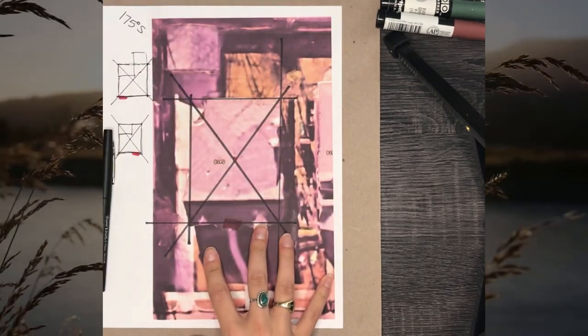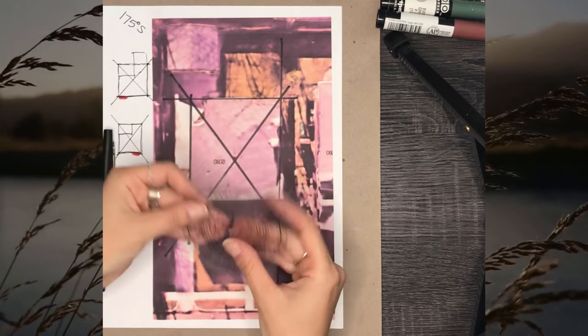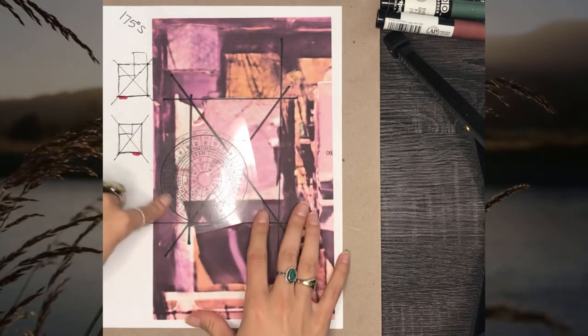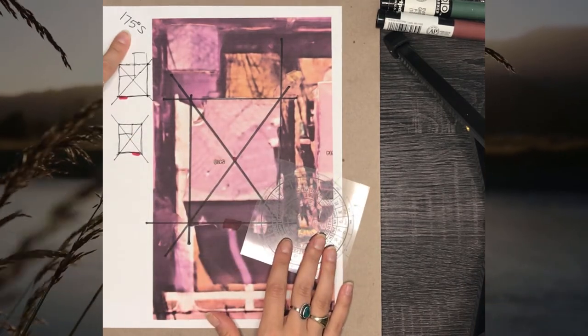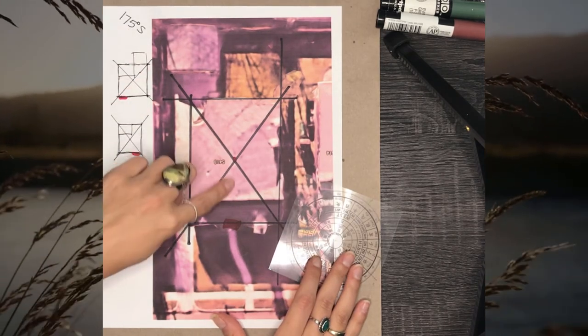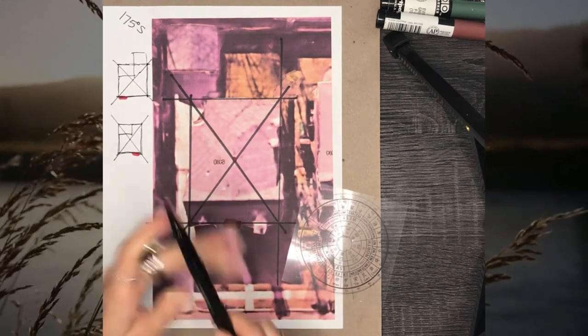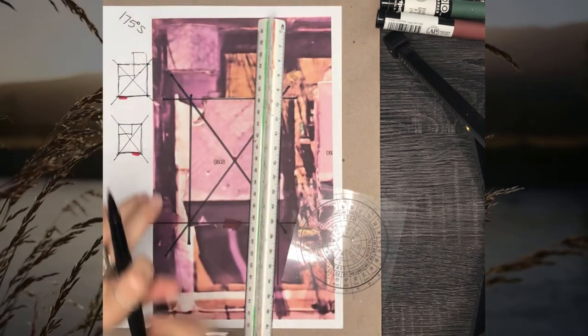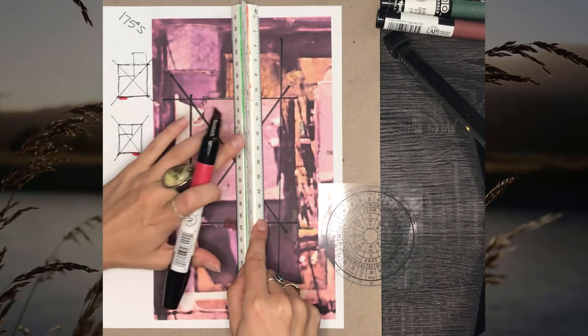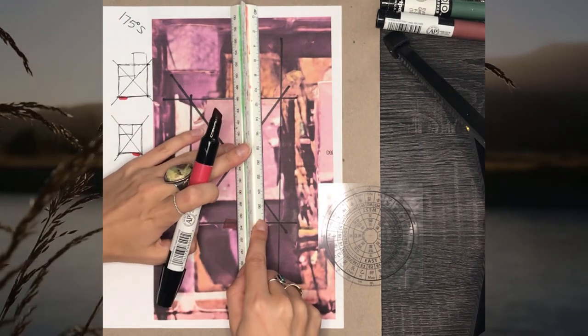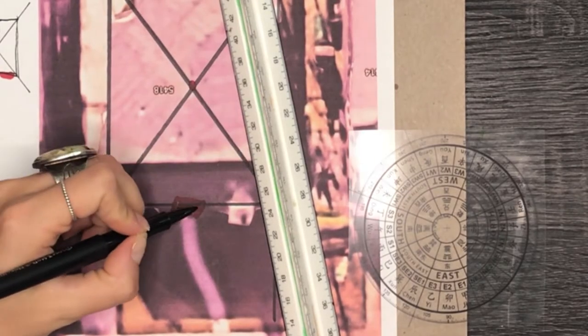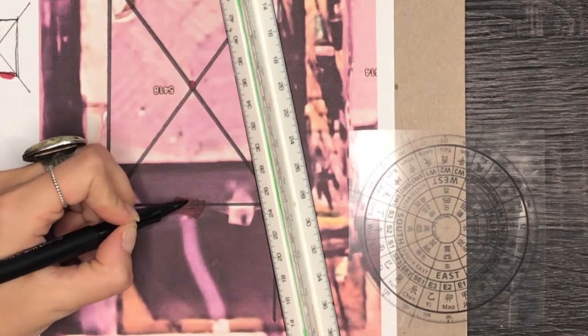I am going to use my fancy feng shui transparency that has all the different stuff on it. So 175 degrees south. What we want to do is line that degree up with the door. Take your ruler, center the dot, and find the center of your door frame.